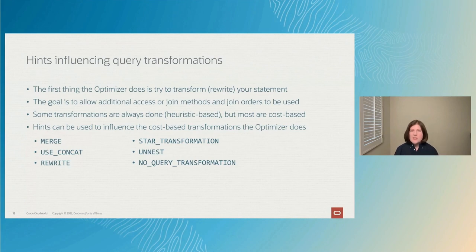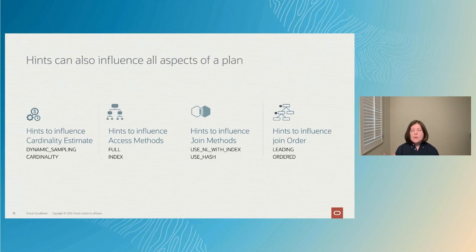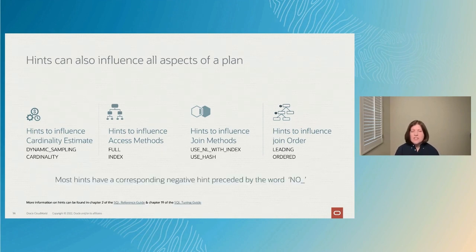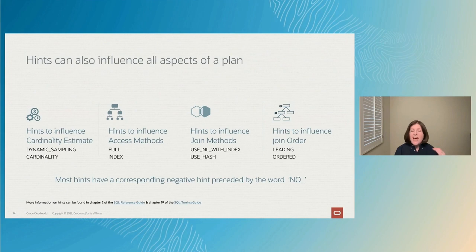Once the optimizer has transformed your query, it moves on to determine the actual execution plan. You can use hints to influence all aspects of the plan — from the cardinality estimates using hints like DYNAMIC_SAMPLING or the CARDINALITY hint, to the access methods, the join methods, and even the join order. You can also use hints to tell the optimizer what not to do — each hint has a corresponding negative hint preceded with 'NO_'.